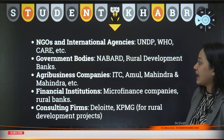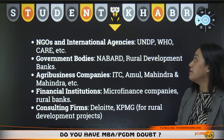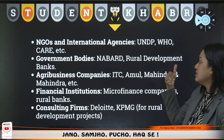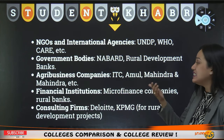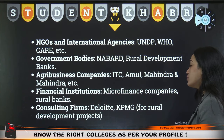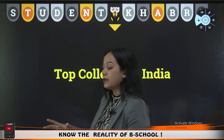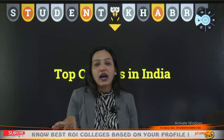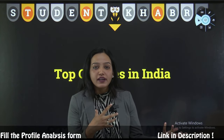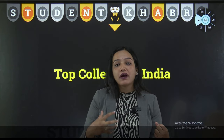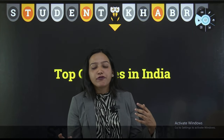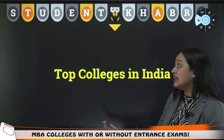Top recruiters — if you talk about NGOs and international agencies: UNDP, WHO, CARE — they hire. Government bodies, rural development banks, agri-business companies like ITC, Amul, Mahindra, financial institutions, micro-finance companies, rural banks, consulting firms like KPMG — they hire for rural development projects. I'll give you a small example: we have an incubation center in Bhopal where I'm based, and the smart city consulting firm involved was Deloitte. These consulting firms hire because if you look at many government offices, they have EY, PwC, Deloitte — all these companies recruit these candidates.